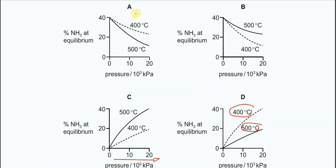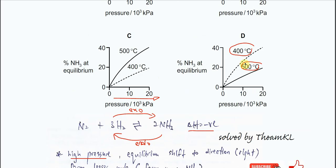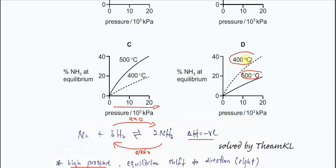Both answers A and D show that the lower temperature has a relatively higher yield than the high temperature — the 400°C graph is above the 500°C graph. If you combine the effect of temperature with the effect of pressure, then you should choose D, because D follows both changes.